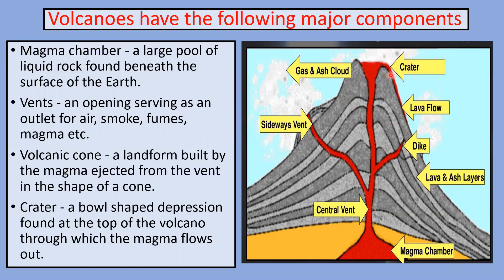The crater is the bowl-shaped opening located at the top of the volcano. The side vent is active and a lava flow is running down the side of the cone. A fissure brings the magma to the side vent.